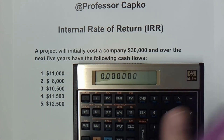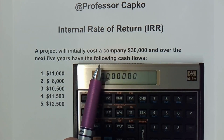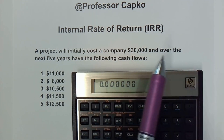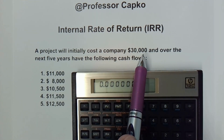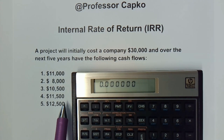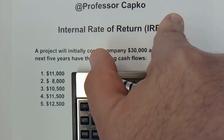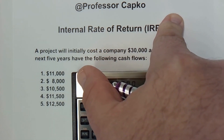Here we're going to work with the Hewlett-Packard HP 12c and calculate the internal rate of return. In other words, with this project, if they invest $30,000 and then over the next five years receive these projected cash flows — at what discount rate, at what interest rate would the net present value equal zero? If you're not sure what a net present value is and how that compares to the IRR, I have a video linked up here that would be a good starting spot.